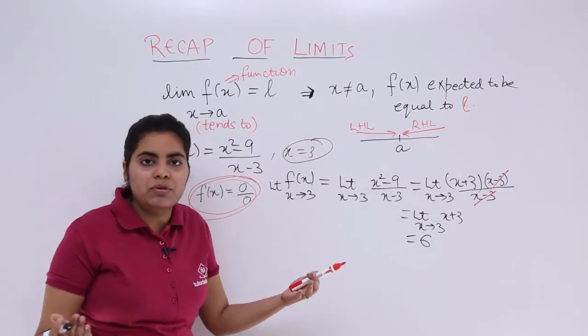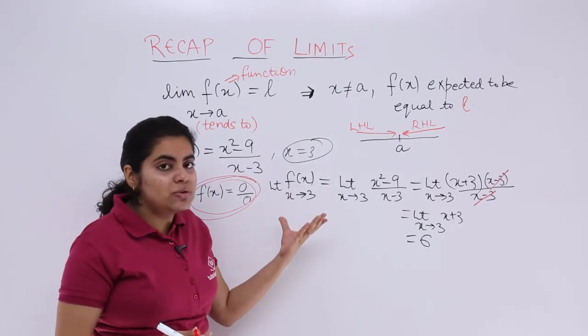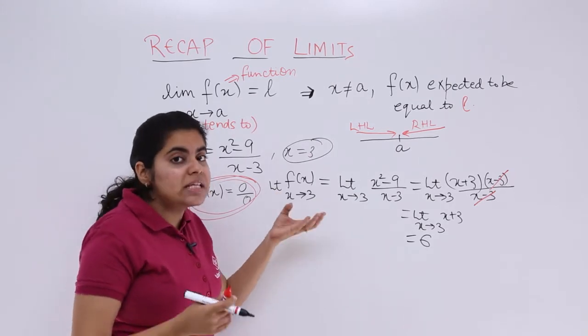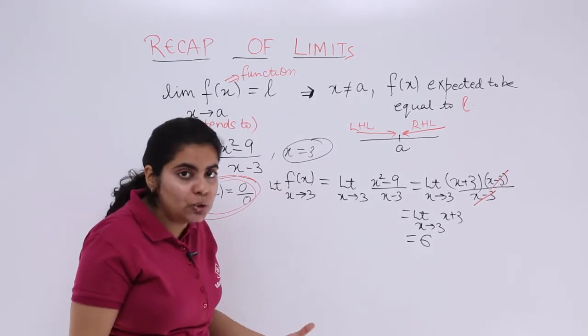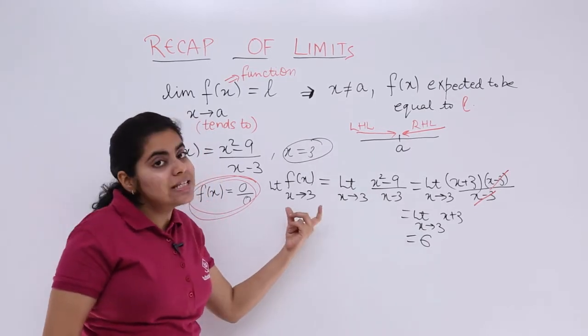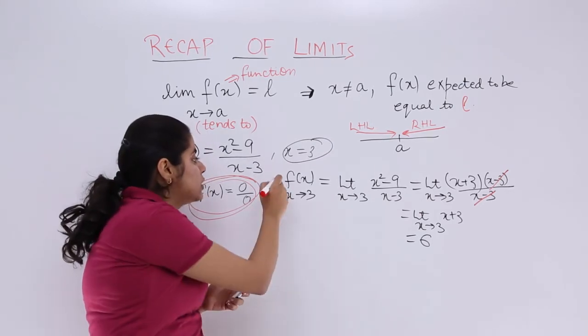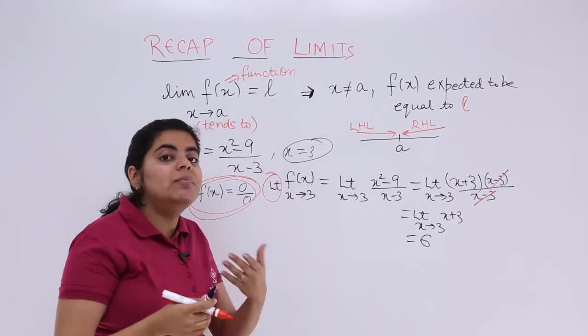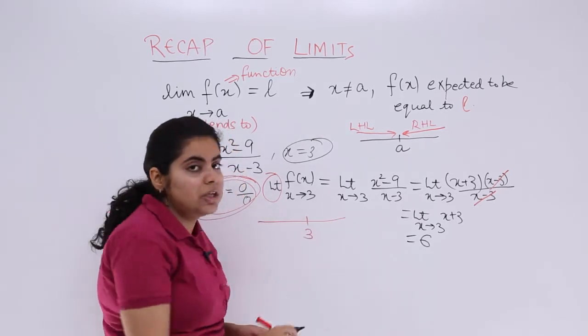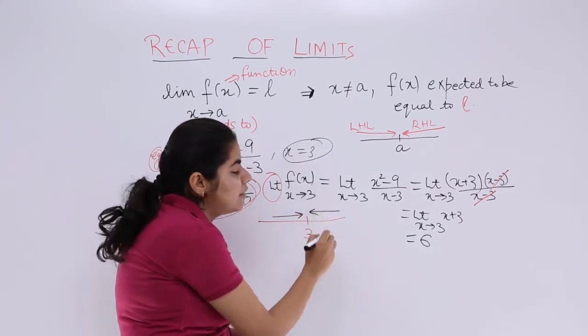Some students think that getting 6 is fine. But what I mean to say is that f(x) is expected and supposed to be reaching 6 when x is expected to approach 3. That's why it's known as the concept of limit - the limiting value or the neighborhood is into consideration. You can approach 3 from the left-hand side and right-hand side.